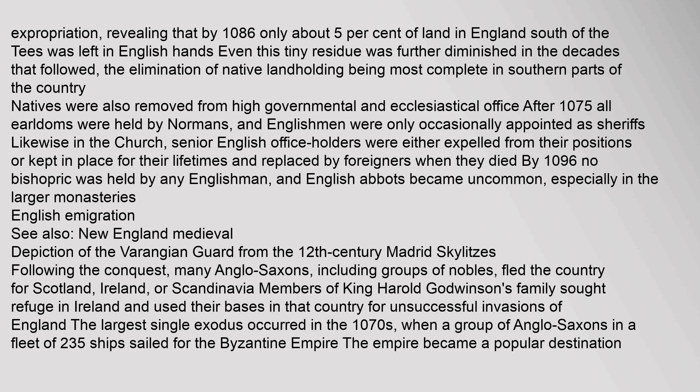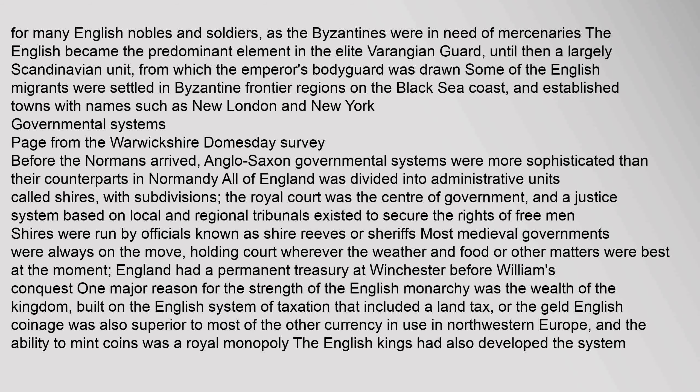Following the conquest, many Anglo-Saxons, including groups of nobles, fled the country for Scotland, Ireland, or Scandinavia. Members of King Harold Godwinson's family sought refuge in Ireland and used their bases in that country for unsuccessful invasions of England. The largest single exodus occurred in the 1070s, when a group of Anglo-Saxons in a fleet of 235 ships sailed for the Byzantine Empire. The empire became a popular destination for many English nobles and soldiers, as the Byzantines were in need of mercenaries. The English became the predominant element in the elite Varangian guard, until then a largely Scandinavian unit, from which the emperor's bodyguard was drawn. Some of the English migrants were settled in Byzantine frontier regions on the Black Sea coast, and established towns with names such as New London and New York.